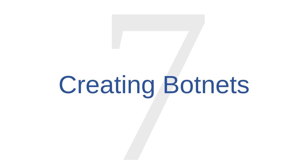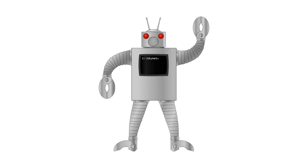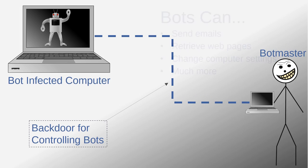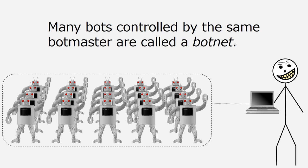Malware function number seven is creating botnets. In the previous lesson, I discussed bots — malware programs that can control your computer without your input. For example, they might automatically send emails, retrieve web pages, change computer settings, or submit usernames, passwords, or financial data into a website. Some cybercriminals create bots they can control through backdoors on a user's computer. These cybercriminals who control networks of malicious bots are called botmasters. Botmasters develop vast networks of thousands of computers they can control through their bots — these bot-controlled networks are called botnets.